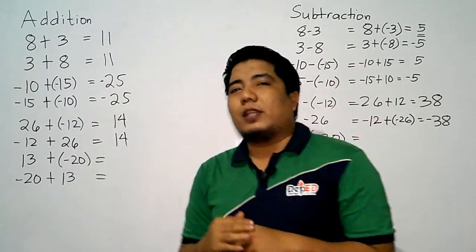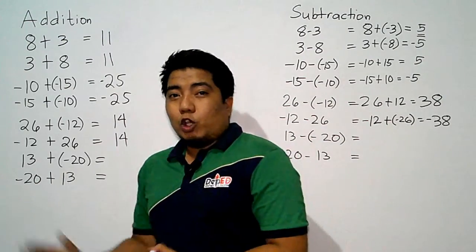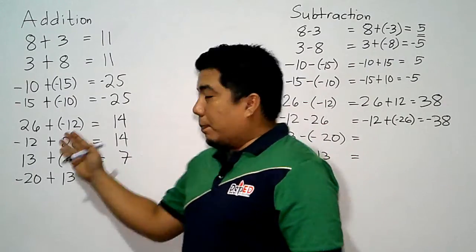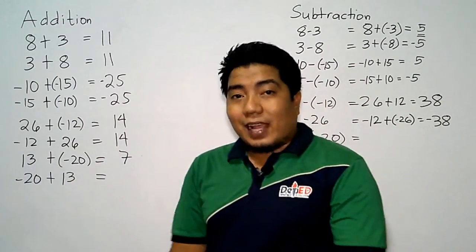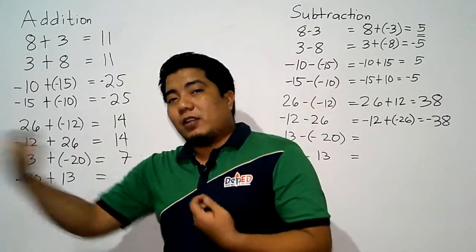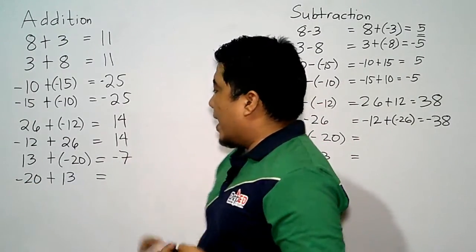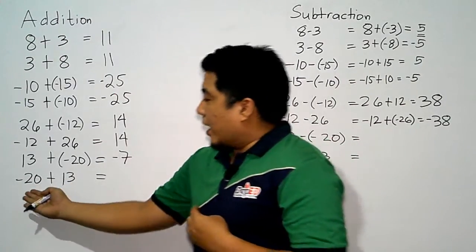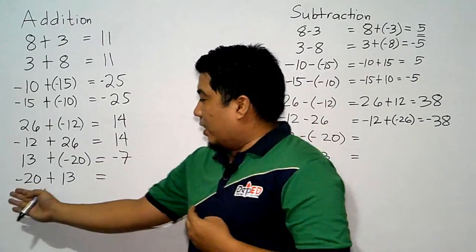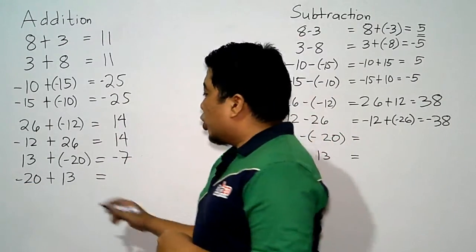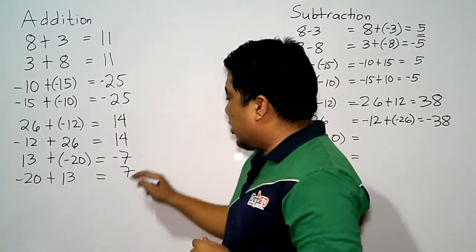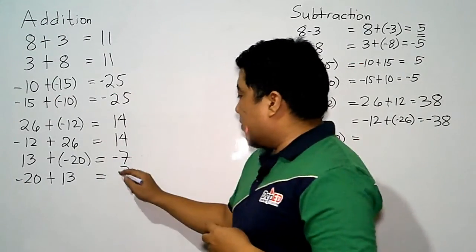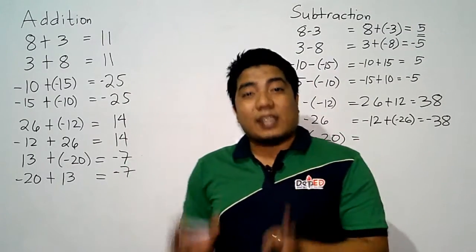What if we have a bigger value that is negative? In addition, 13 plus negative 20 — both are different signs — so we subtract the values, giving us 7. Since our 20 is negative and it is bigger than positive 13, our final answer is negative 7. Similarly, negative 20 plus 13: subtract the values to get 7, and the bigger sign is negative, so the final answer is also negative 7.